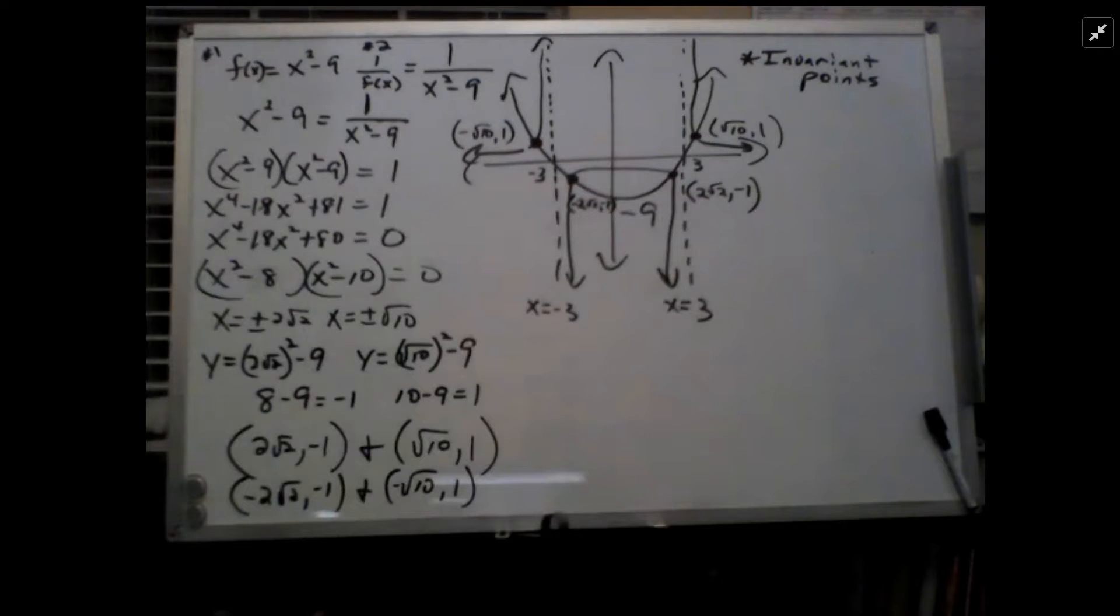So long story short, the answers are 2 radical 2, negative 1, negative 2 radical 2, negative 1, radical 10, positive 1, and negative radical 10, positive 1.